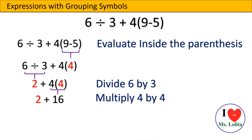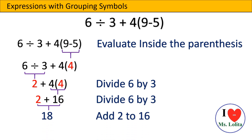Next, we multiply 4 by 4 and it will give us 16. The last step is addition, so we add 2 to 16 and it will give us 18. Therefore, 6 divided by 3 plus 4 times (9 minus 5) will give us 18. It is easy, right?